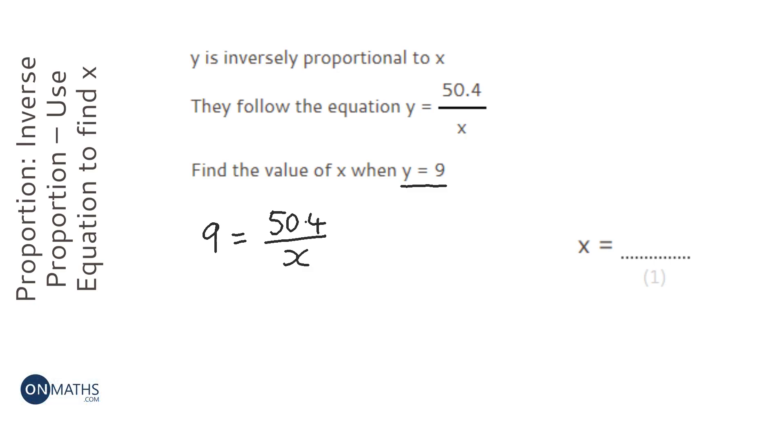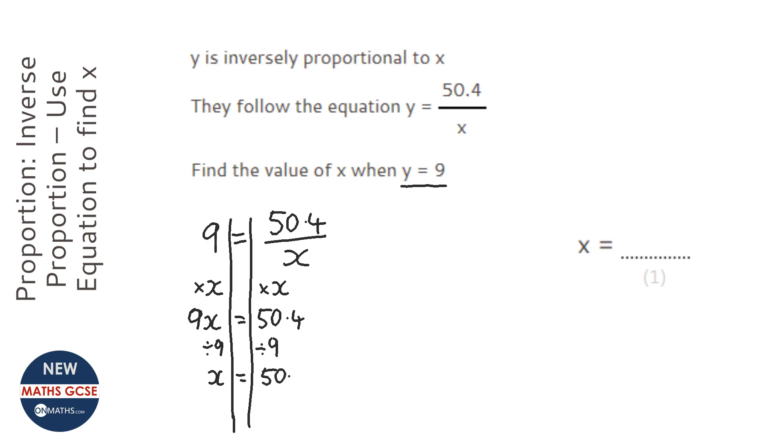Over x. Now I put my lines in. Now there's two ways of doing this. Either I can times both sides by x so I get 9x equals 50.4, and then divide both sides by 9, so x equals 50.4 over 9.